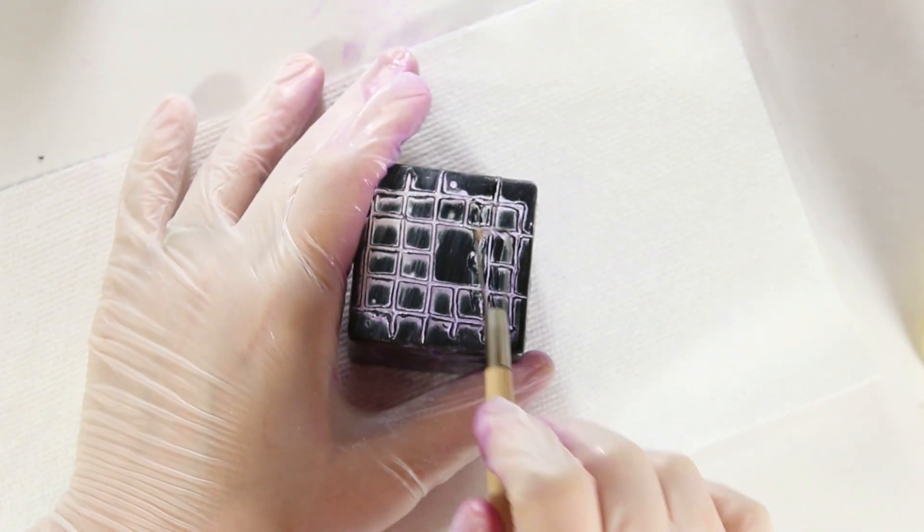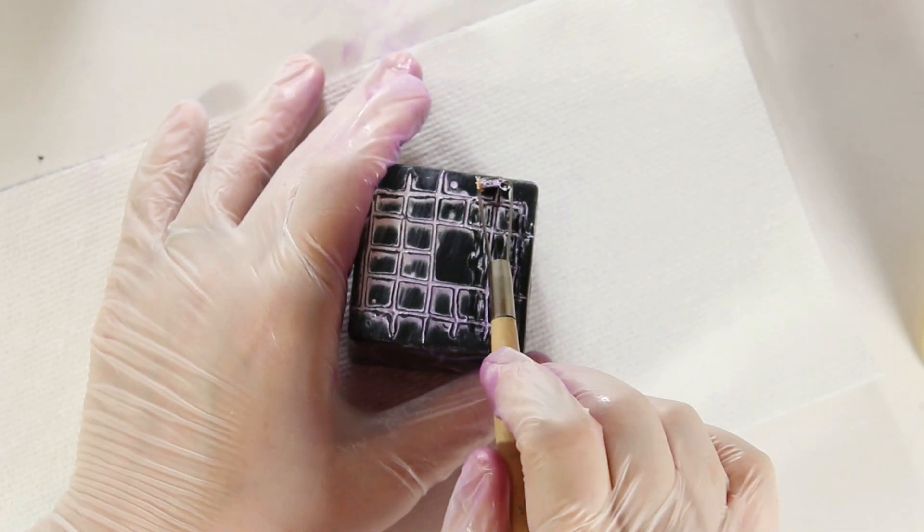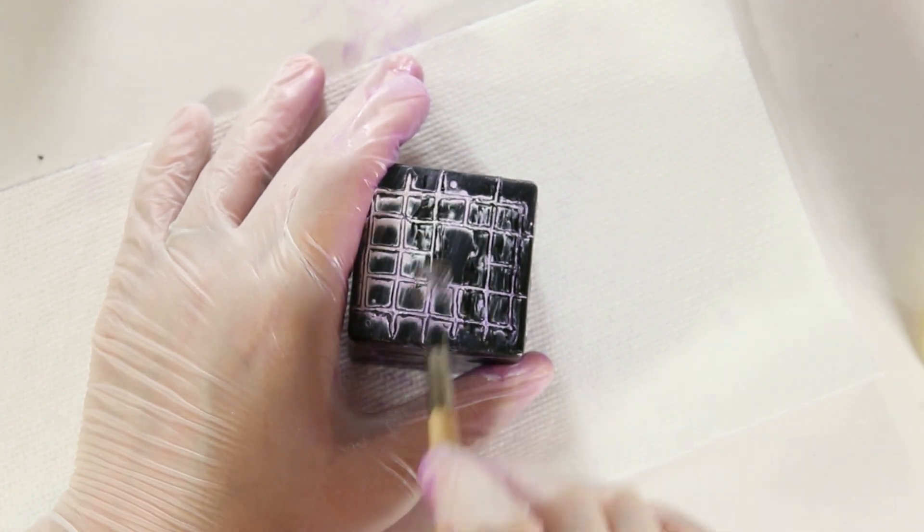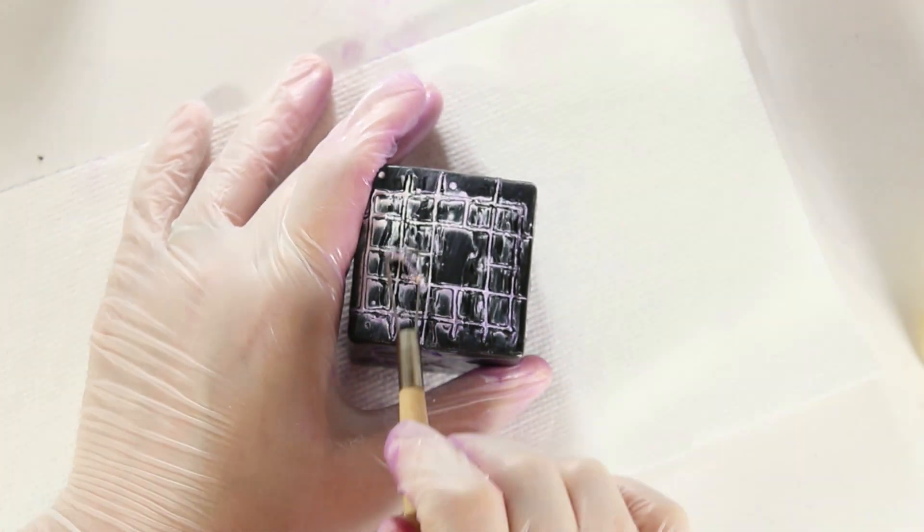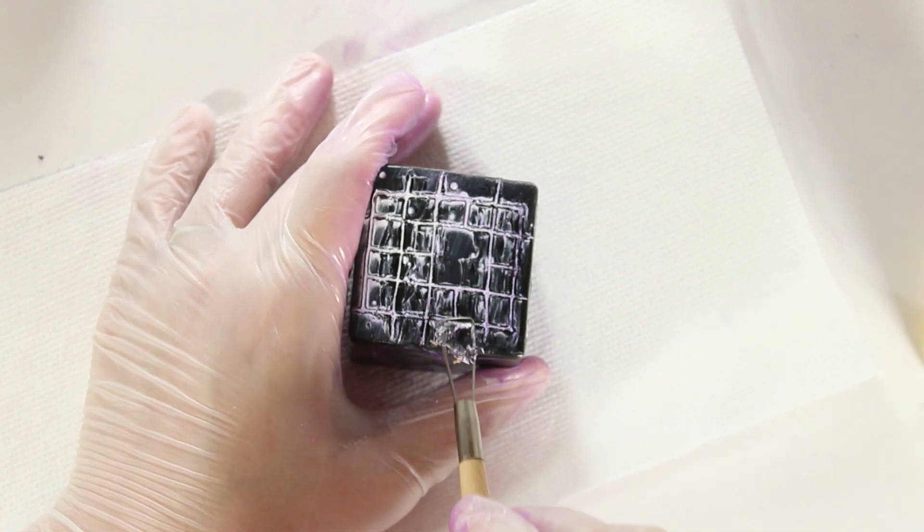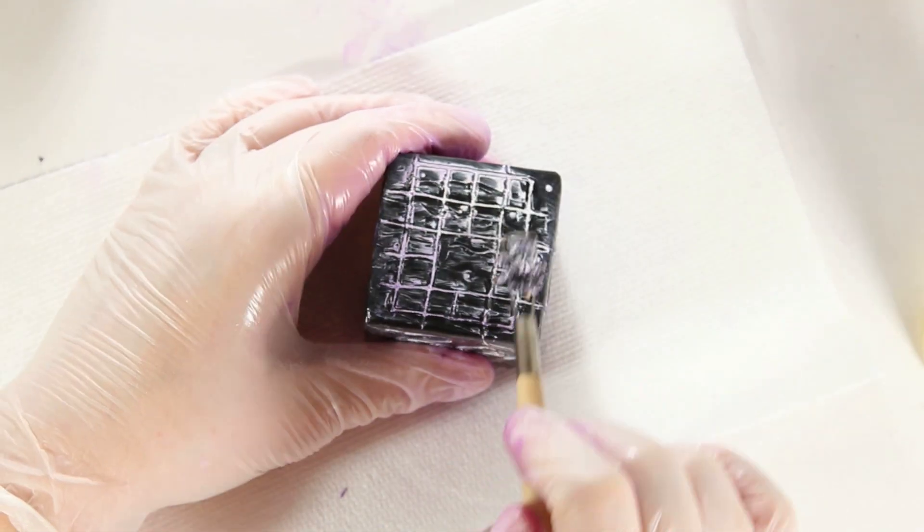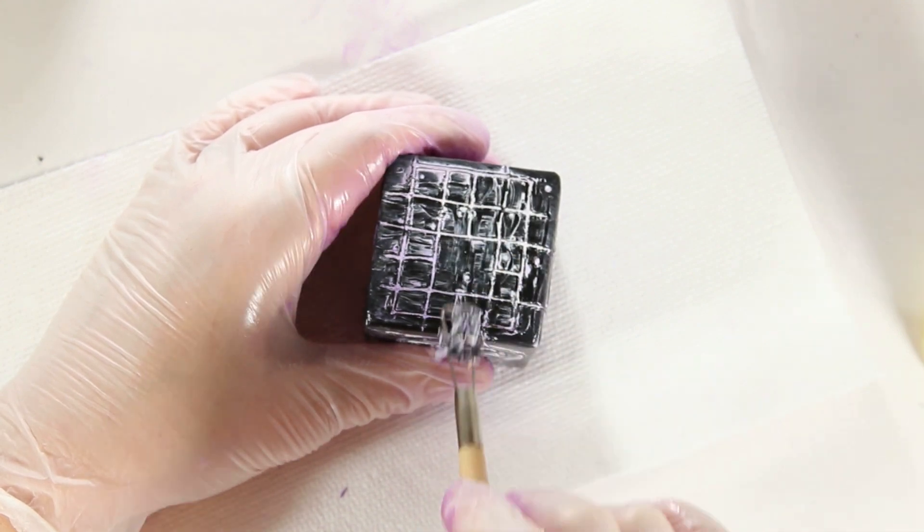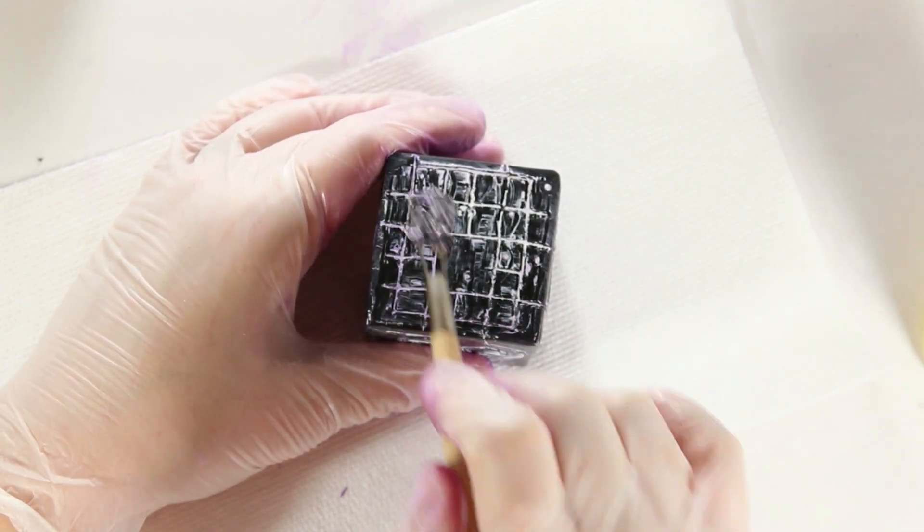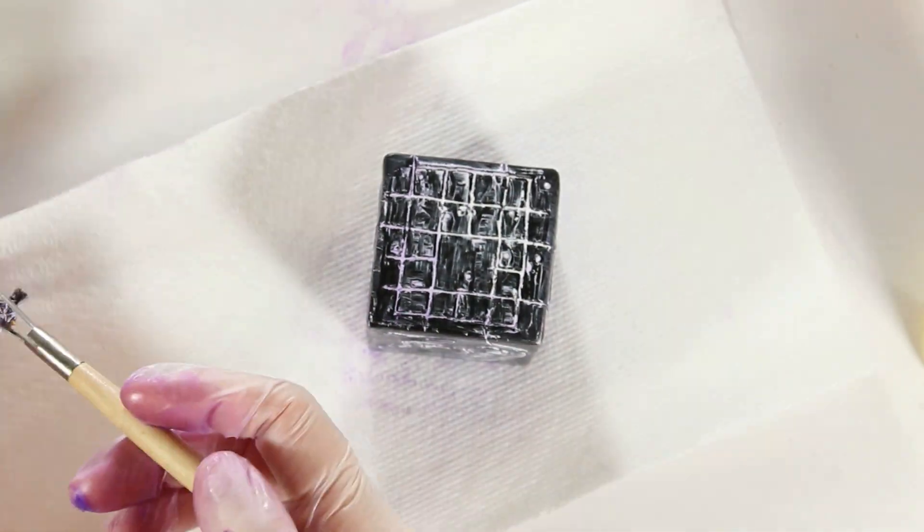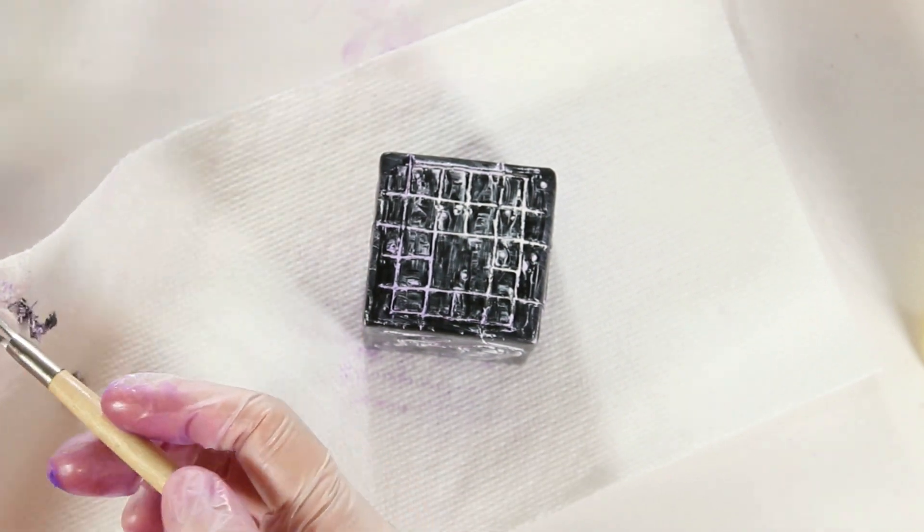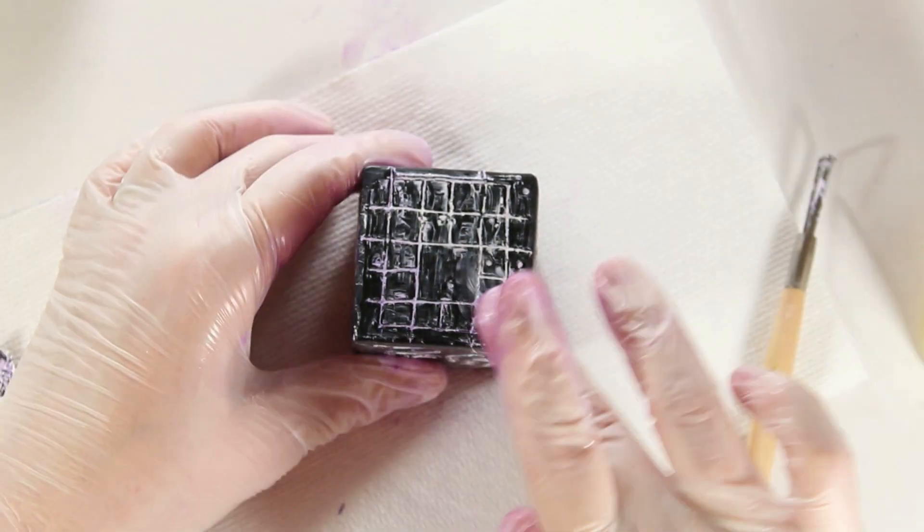So once I got off as much oil paint as I could, I'm scraping the lines to kind of get rid of that excess wax that built up around my carved lines. And you should be able to see, once I wipe away the rest of the oil paint, that the lines are much finer and detailed than they were before.